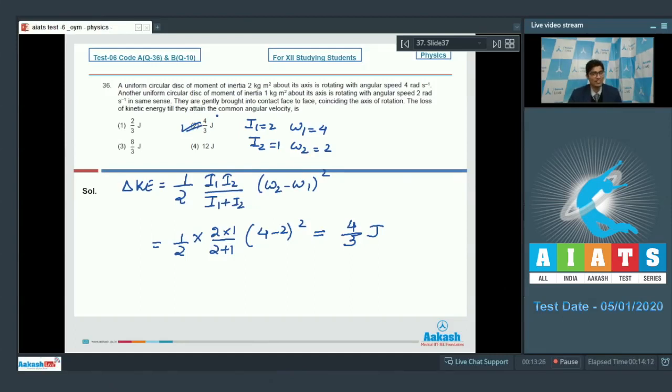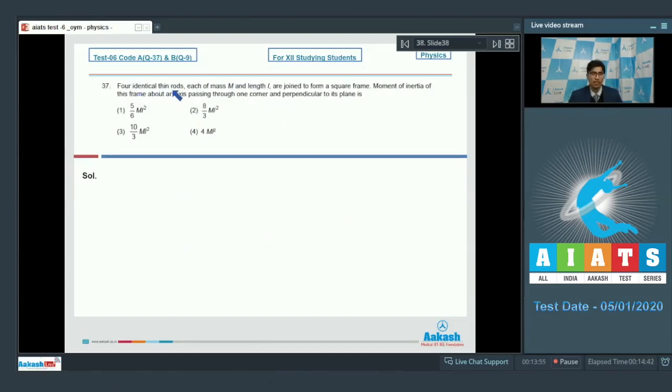Now let us proceed to question number 37. Question number 37 says, 4 identical thin rods each of mass capital M and length L are joined to form a square frame. Moment of inertia of this frame about an axis passing through one corner and perpendicular to its plane is.